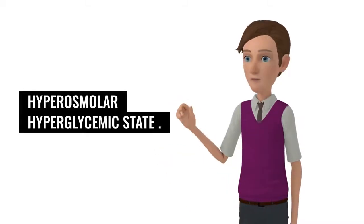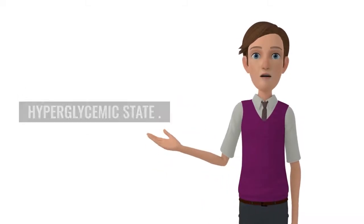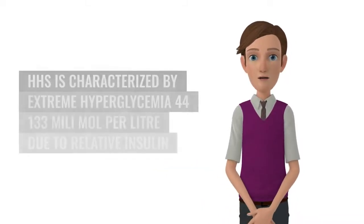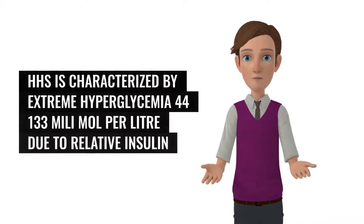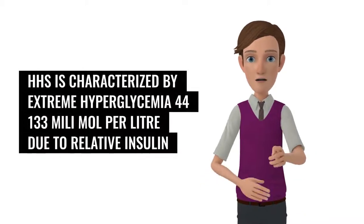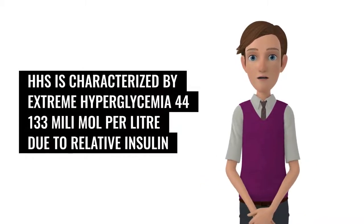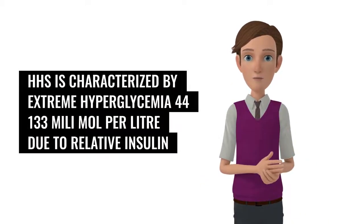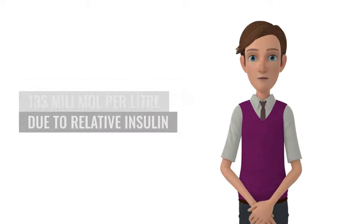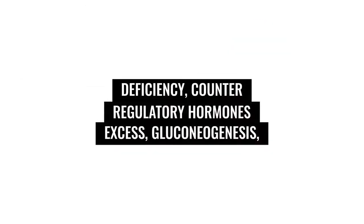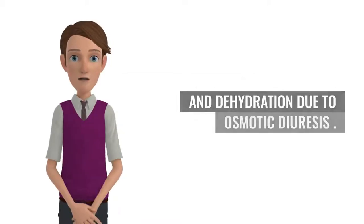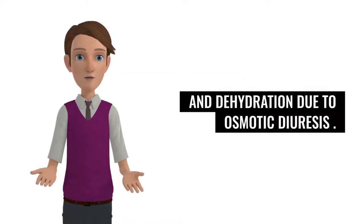Hyperosmolar hyperglycemic state. HHS is characterized by extreme hyperglycemia, 44 to 133 millimole per liter, due to relative insulin deficiency, counter-regulatory hormones excess, gluconeogenesis, and dehydration due to osmotic diuresis.